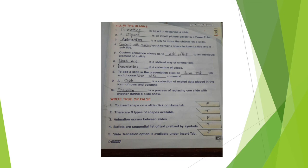True or False: 1. To insert a shape on a slide, click on the Home tab — False. 2. There are 9 types of shapes available — True. 3. Animation occurs between slides — False. 4. Bullets are the sequential list of text prefixed by symbols — True. 5. Slide transition option is available under the Insert tab — False.